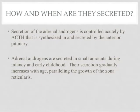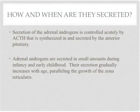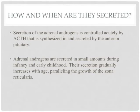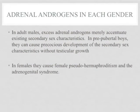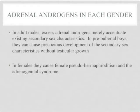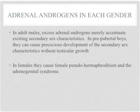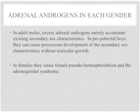Adrenal androgens are secreted in small amounts during infancy and early childhood. Their secretion gradually increases with age, paralleling the growth of the zona reticularis. In adult males, excess adrenal androgens merely accentuate existing secondary sex characteristics, but in prepubertal boys they can cause precocious development of secondary sex characteristics without testicular growth — for example, hair in the groin and the axilla as well as facial hair.